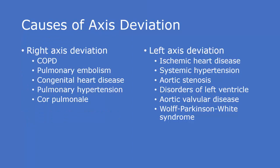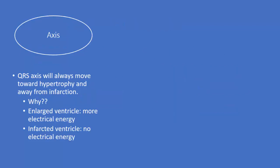Common causes of axis deviation with right and left could be cardiac or pulmonary issues. With right axis especially, you'll see causes like cor pulmonale and COPD. Your QRS axis will always move towards hypertrophy and away from infarction. Why? Because an enlarged ventricle causes more electrical energy and an infarcted ventricle is not going to use any type of electrical energy.